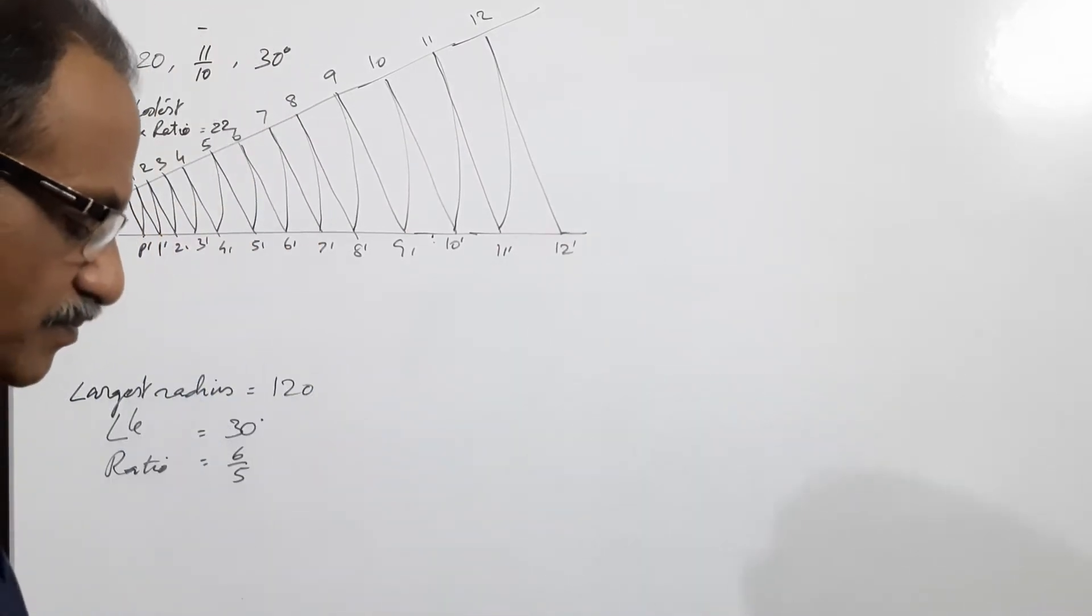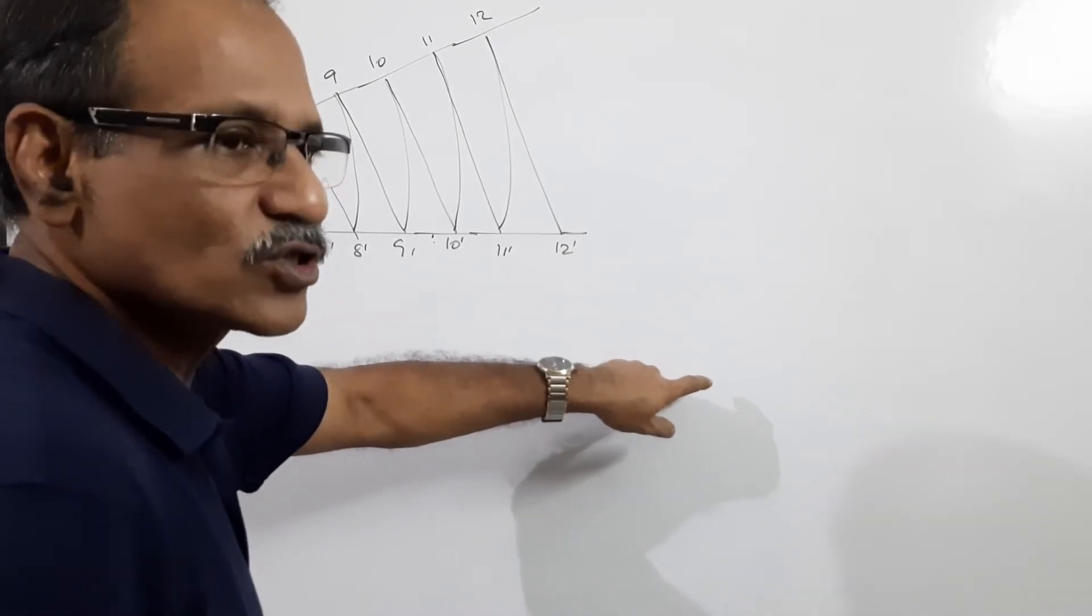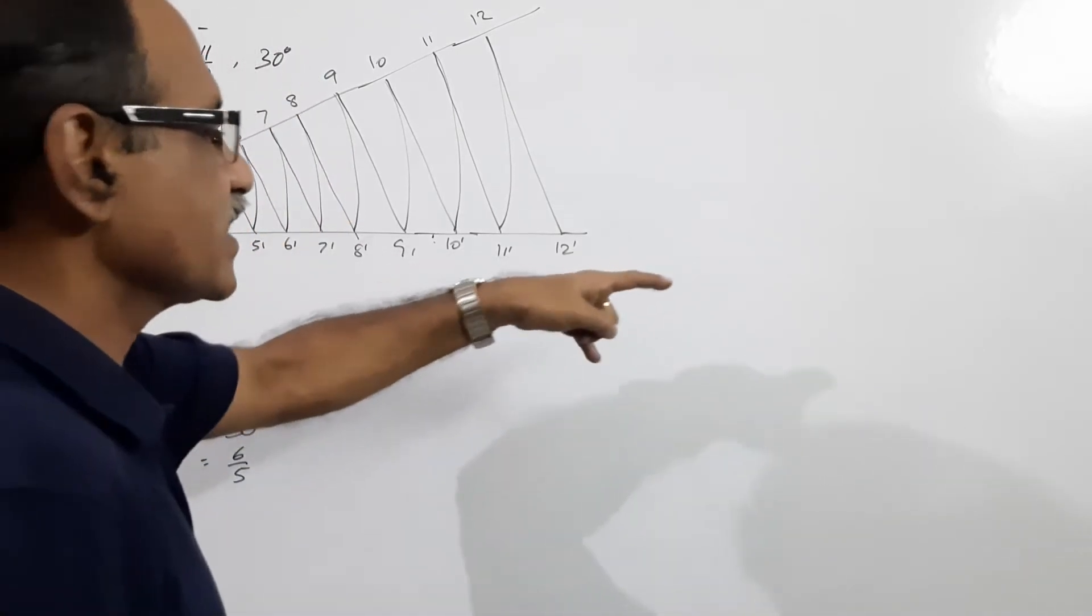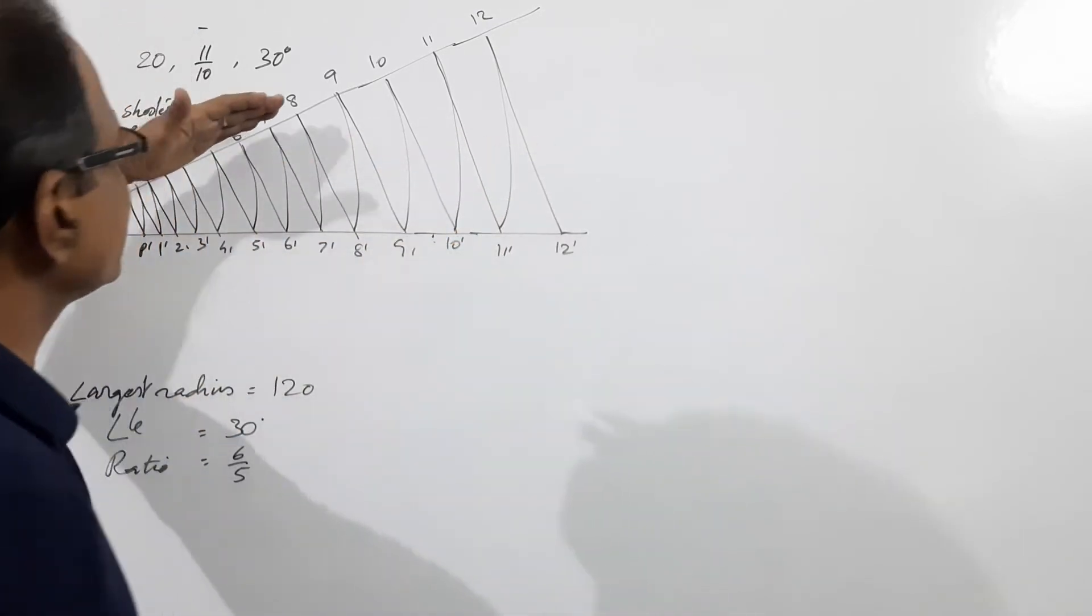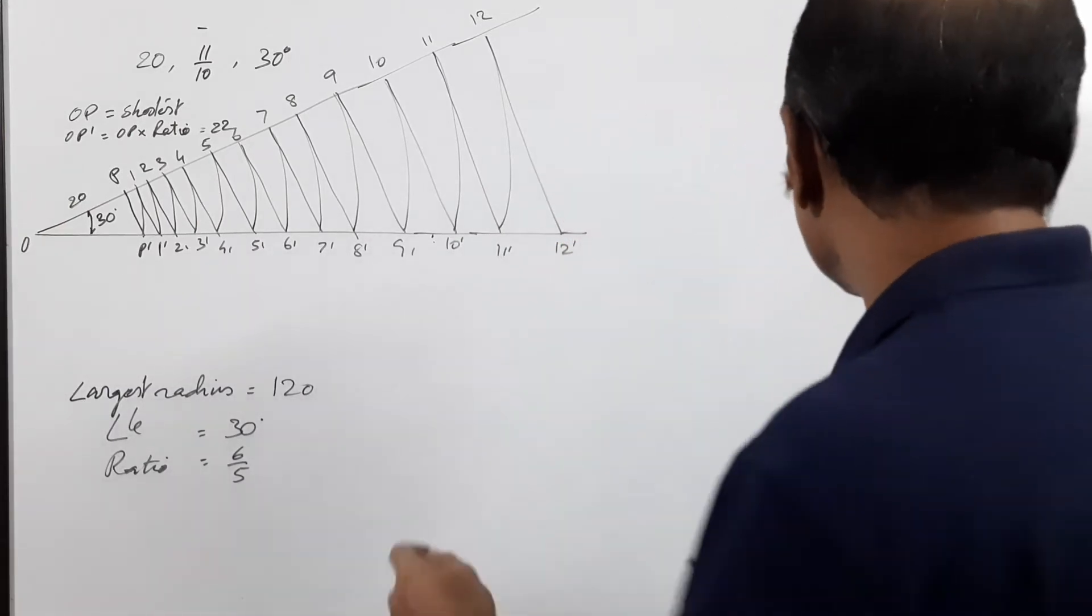Then you take OP and mark on the horizontal radius. Mark the next 20, OG.